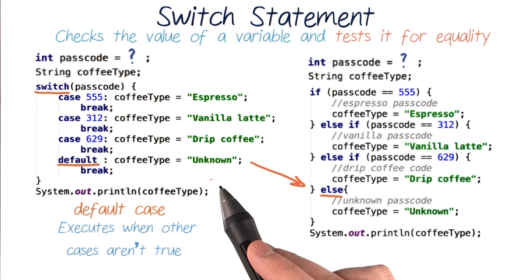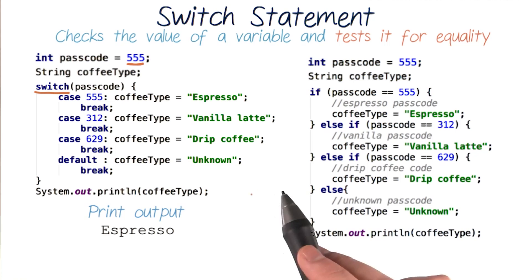There's also a default case that acts the same as an else statement. The default code will execute whenever our other cases aren't met, like if the passcode was something like 914 and we don't recognize it or don't have a case for it.